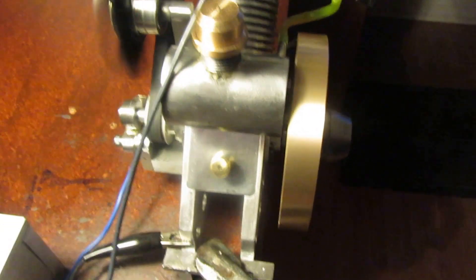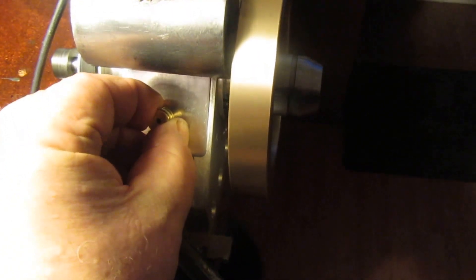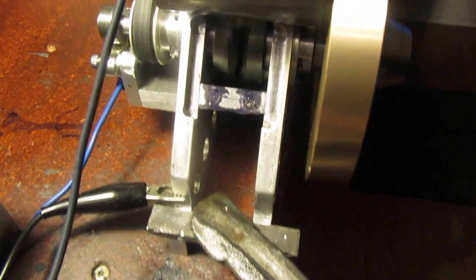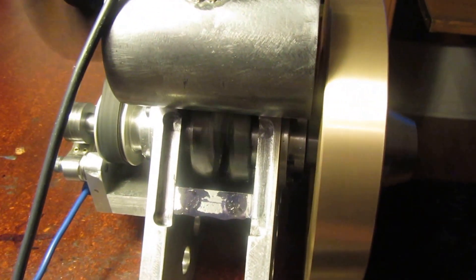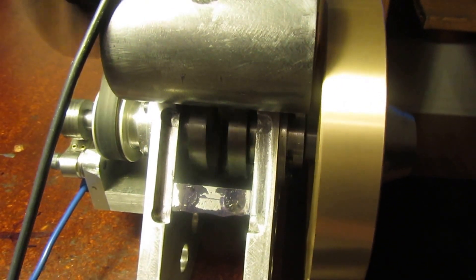One of the other features of this engine that you haven't seen: this cover right here, held on with a couple of rare earth magnets, gives me access to the large end of the conrod to give it a squirt of oil.